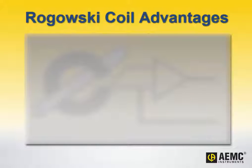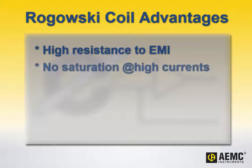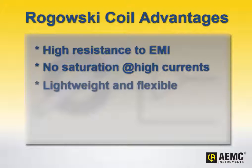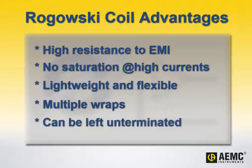Rogowski coils offer several advantages over other probe types, such as iron core, Hall effect, and flux gate. For example, they provide high resistance to electromagnetic interference, and there is no saturation when measuring high currents, ensuring the probes are subject to very little heating. They are lightweight and flexible. The probes can be wrapped multiple times around a conductor to amplify sensitivity, and they can be left unterminated without being damaged or developing hazardous voltage levels.